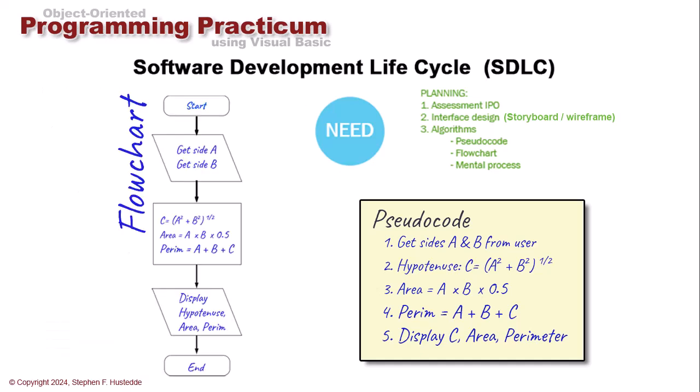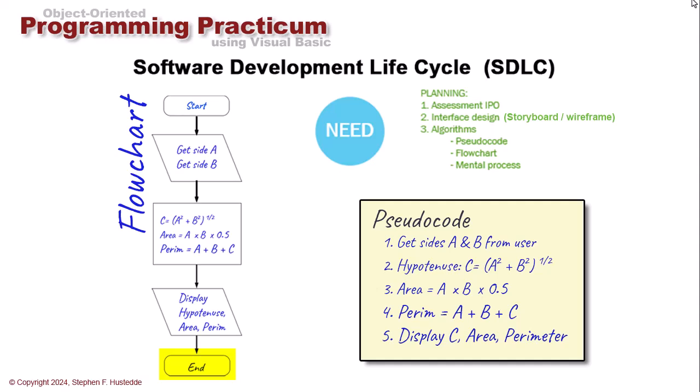Another tool is a graphical approach called a flowchart, where we have different symbols for the various aspects of the process. I start with the cigar shape at the beginning. I use a parallelogram for input or output — in this case, getting the input of sides A and B. Then a rectangle symbol is used for process, which is the calculation: side C as the square root of A squared plus B squared, area as A times B times 0.5, and perimeter as A plus B plus C. Then another parallelogram for output — displaying the hypotenuse, area, and perimeter — and finally another cigar shape for the end.